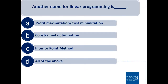Another name for linear programming is constrained optimization. So you're trying to either maximize your profit or minimize your cost, subject to certain constraints. That's constrained optimization.